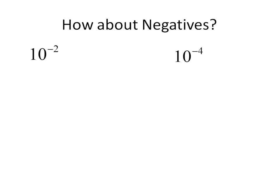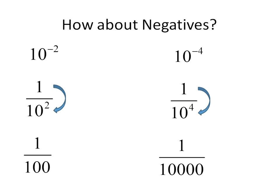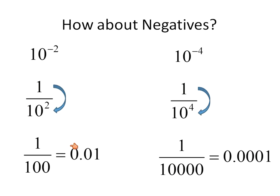How about negatives? I want to show you a couple with negatives. Remember, negative exponents mean you put them on the denominator. So 10 to the power of negative 2 becomes 1 over 10 to the power of 2, and 10 to the power of negative 4 becomes 1 over 10 to the power of 4. When we switch to the denominator, the exponent becomes positive. So 10 to the power of 2 is 100 and 10 to the power of 4 is 10,000 — giving us one hundredth or one ten-thousandth, also written as 0.01 and 0.0001.